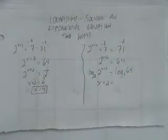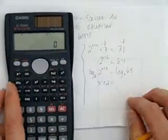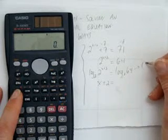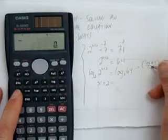And then on my calculator, which I seem to have misplaced, here it is. On my calculator, I can compute log 64 by going log 64 divided by log 2. You don't have to show this work.